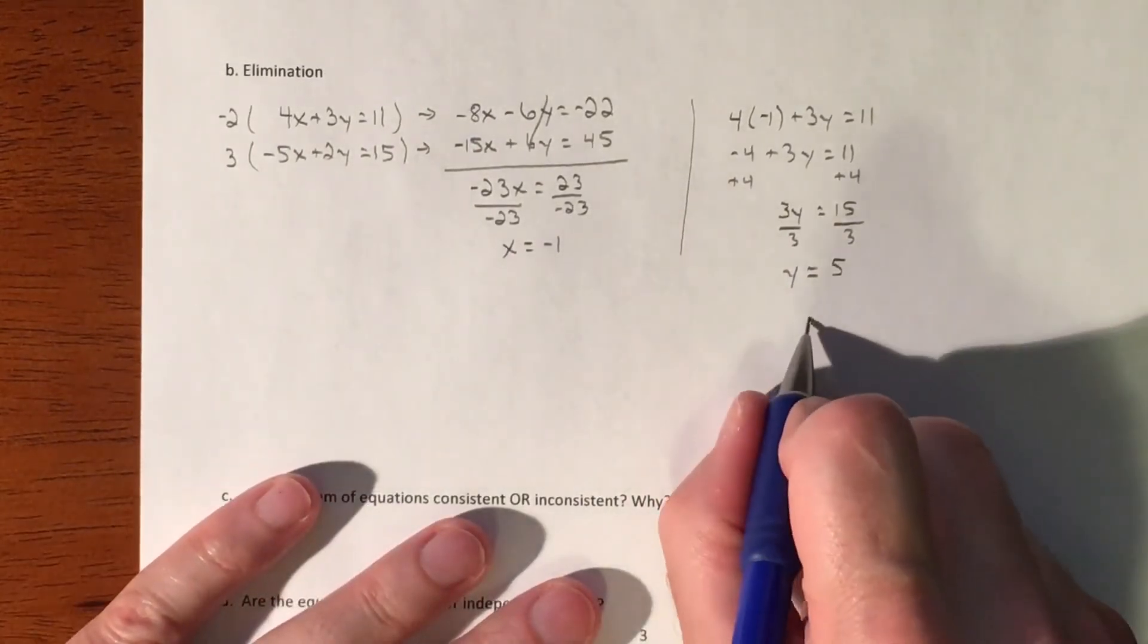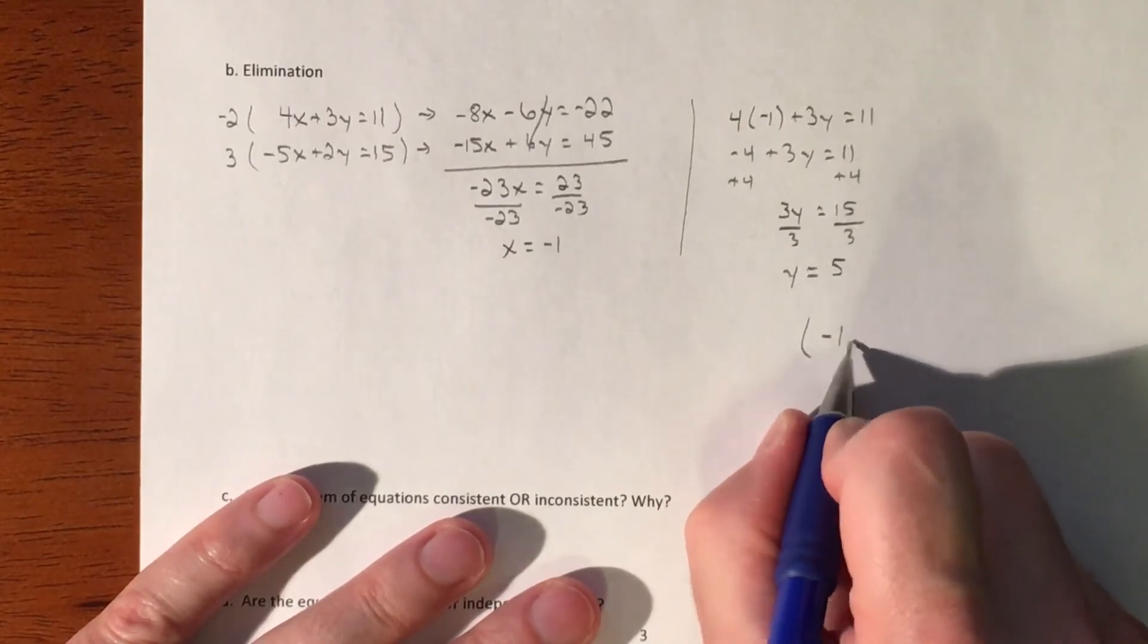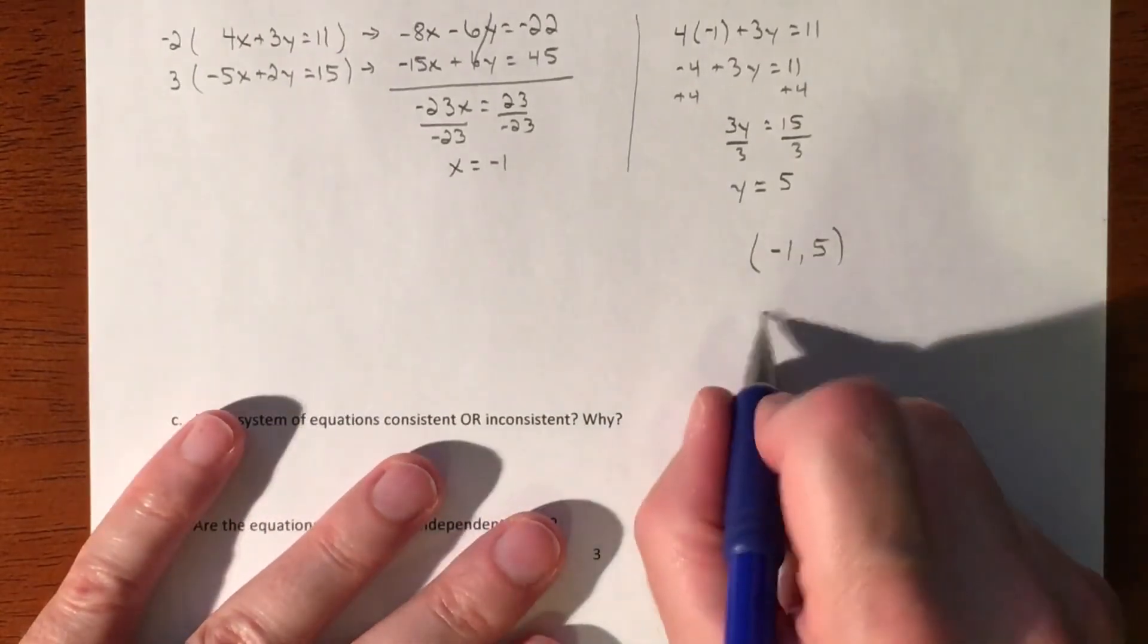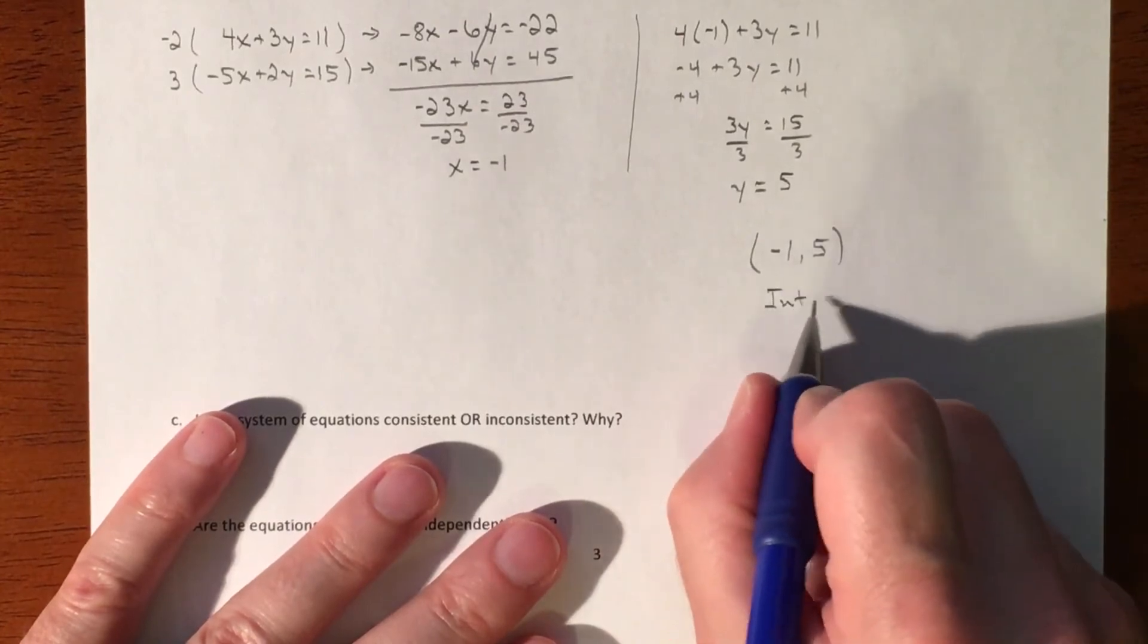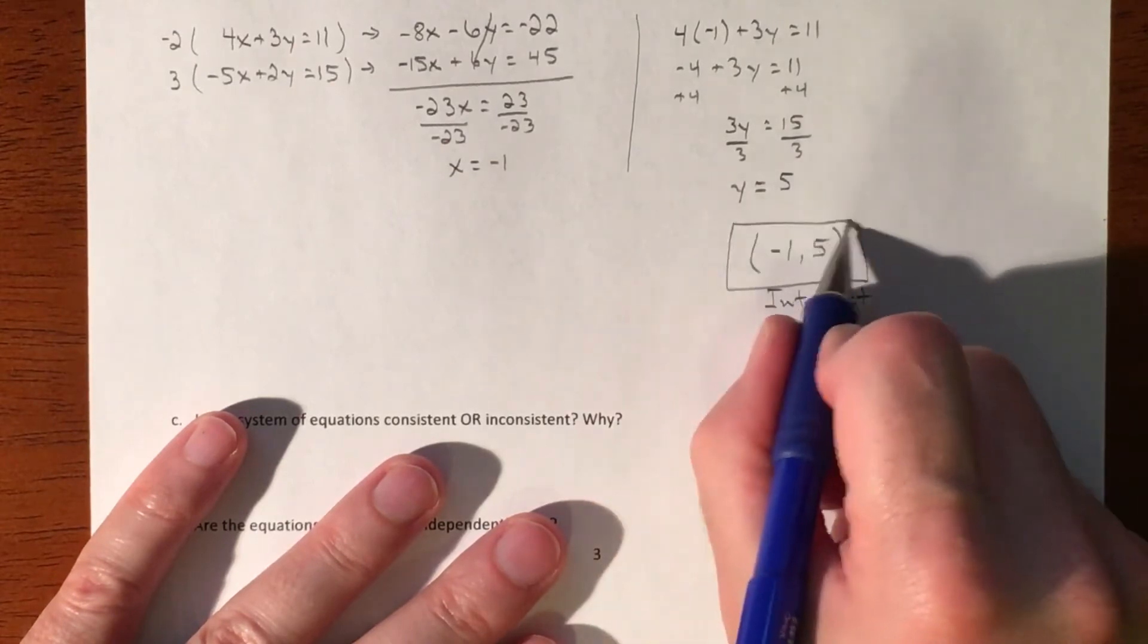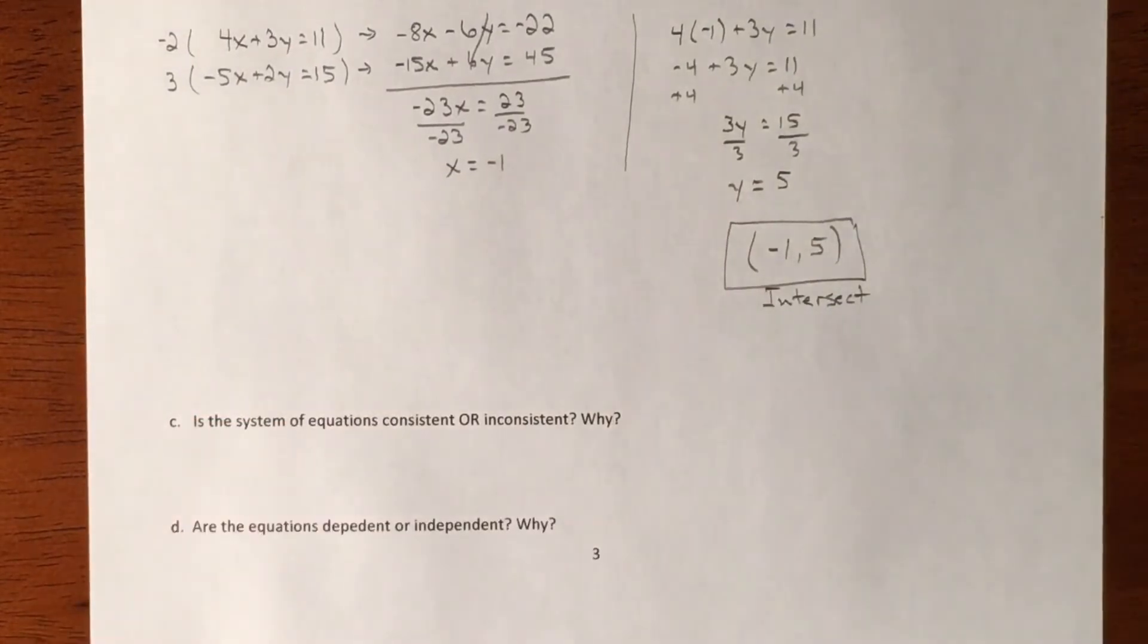So my solution is negative 1, 5. So without graphing, I know that my lines would intersect. I don't need to graph it to know basically what would happen with these two lines and that's exactly where they would intersect.